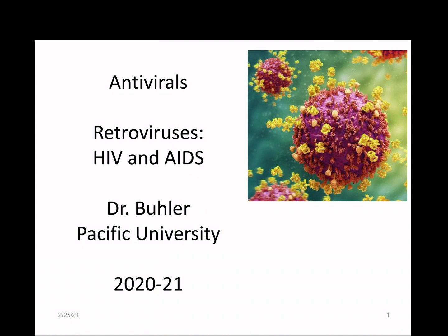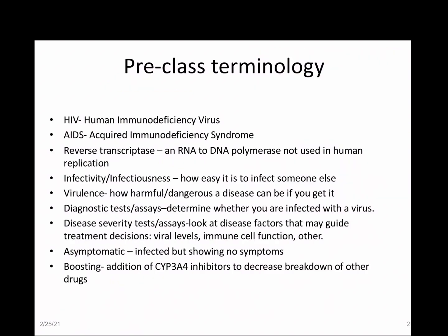Hi, this is Dr. Buehler, and we're going to talk today about retroviruses, specifically HIV, and the associated disease AIDS. We've got some terminology to review before we get started. One of the most important terms is RT, which stands for reverse transcriptase — a specific DNA polymerase that replicates RNA to DNA. This is an HIV enzyme not found in human replication.